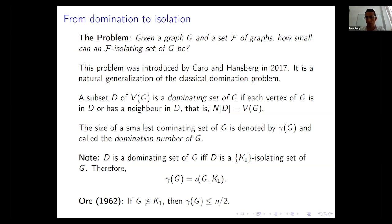Let me explain why. A quick reminder: D is a dominating set of G if each vertex is either in D or has a neighbor in D — every vertex is at most one step away from some vertex in D. In other words, the closed neighborhood N[D] equals the whole vertex set.